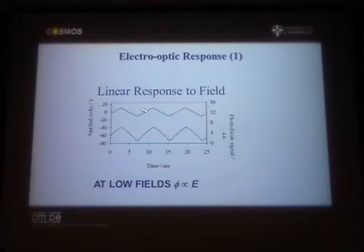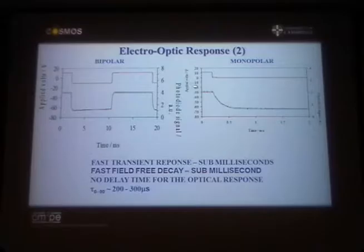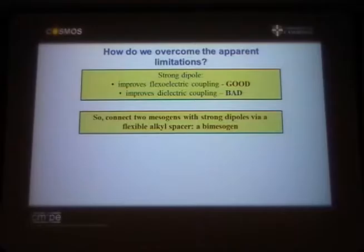To prove the effect is linear: the applied field is a triangular wave and underneath you have the electro-optic response, giving you a gray scale - more voltage, more signal. You can prove it's bipolar: a bipolar pulse gives positive then negative tilt, up and down rotation. For a monopolar pulse you see the decay time, which is fast - depending on elasticity and pitch. What we want is a strong dipole to couple with the flexo-elastic coefficient, but a strong dipole normally gives high dielectric coupling, which we don't want.